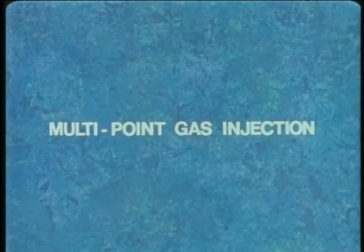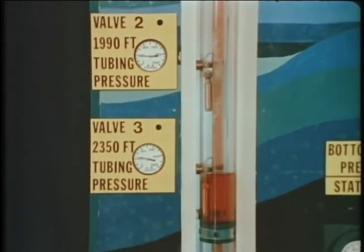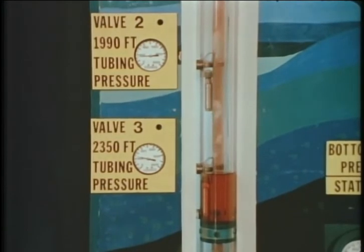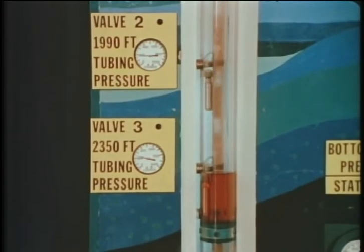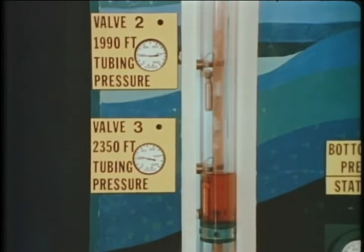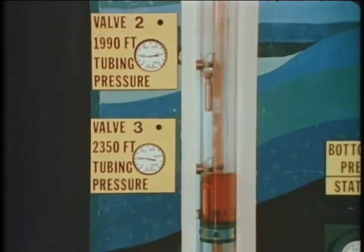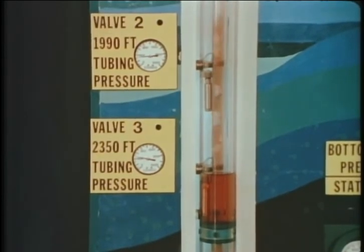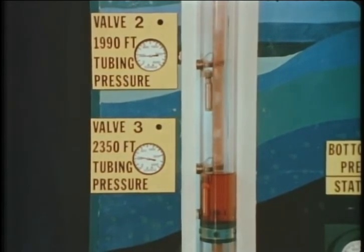Multi-point gas injection. In addition to problems caused by incorrect valve spacing and pressuring, we should discuss briefly the inefficiency of multi-pointing. This term, multi-pointing, describes any condition in a producing gas lift well that causes gas to enter the tubing string at more than one point. In continuous flow installations, single point injection is usually the most efficient form of gas lift and conditions that result in multi-pointing are usually less efficient than those provided by single point injection.